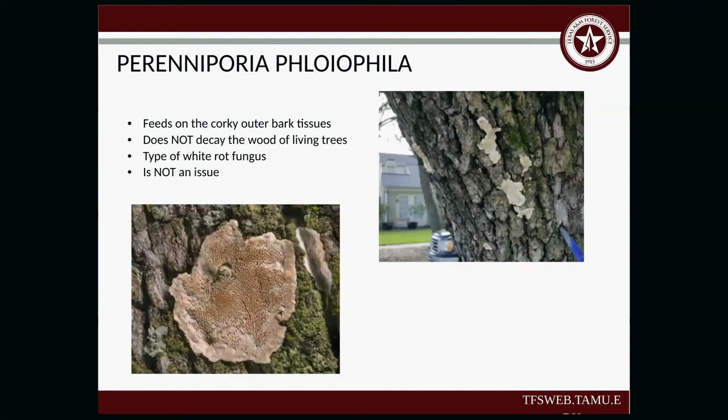There's also a white rot fungus — Phlebia radiata — that feeds on the outer bark tissue but does not decay the wood of the living tree. It's not an issue if you see it. Do not freak out; you don't need to purchase any fungicide. It's not going to harm your tree at all. You know that white stuff you sometimes see on trees? It's not going to hurt you or the tree.